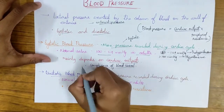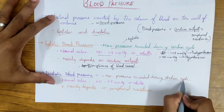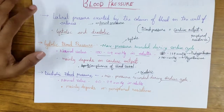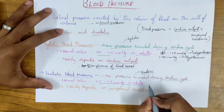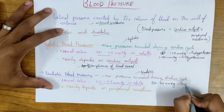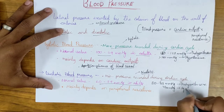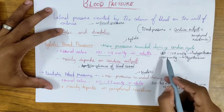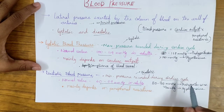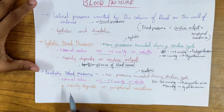The diastolic blood pressure is the minimum pressure recorded in the cardiac cycle, measured during the diastolic phase. Its normal value is 60 to 79 mmHg in adults. If it's 80 to 89 mmHg the patient is pre-hypertensive, and if it's more than 90 mmHg the patient is hypertensive. To summarize: 120–139 mmHg systolic is pre-hypertensive; above 140 mmHg systolic is hypertensive. 80–89 mmHg diastolic is pre-hypertensive; above 90 mmHg diastolic is hypertensive.